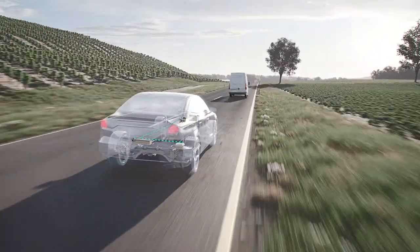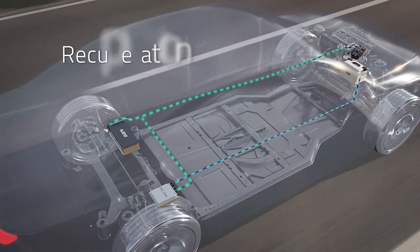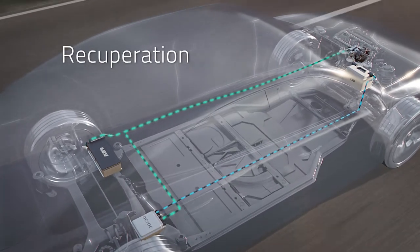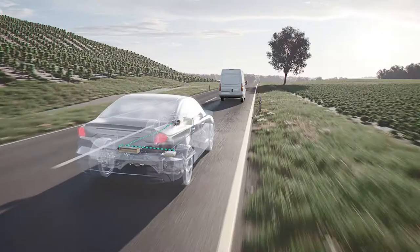While decelerating the vehicle, the BRM converts the car's kinetic energy into electrical energy, which is then stored in the 48-volt battery.